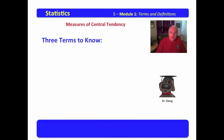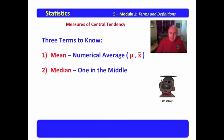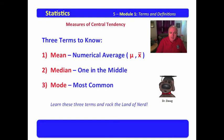There are three terms to know. The first of these is mean, which is the numerical average represented by μ and x̄, where μ is the mean of the population, x̄ is the mean of the sample. Median is the one in the middle. Mode is the most common. Learn these three terms and rock the land of nerd.